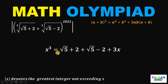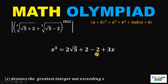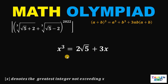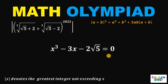So we have x³ = (√5 + 2) + (√5 − 2) + 3x. The two √5 terms combine to give 2√5, and +2 and −2 cancel out. So we get x³ = 2√5 + 3x. Setting this equal to zero: x³ − 3x − 2√5 = 0.